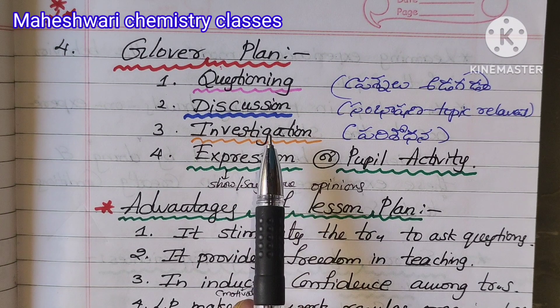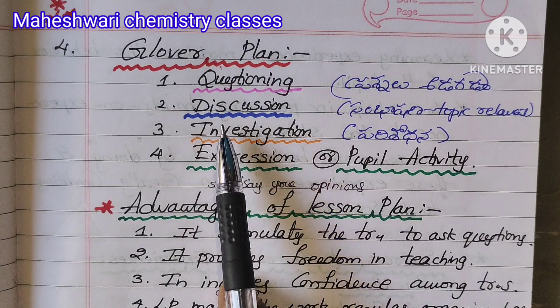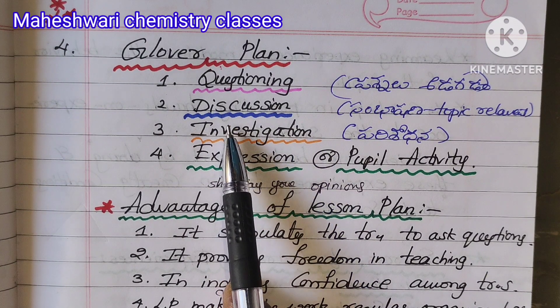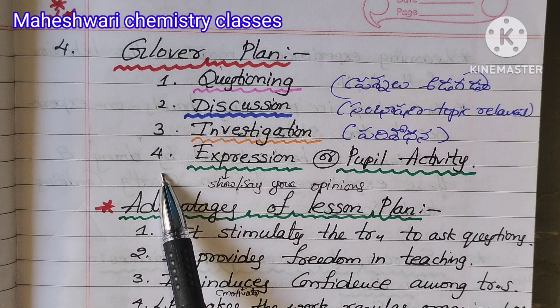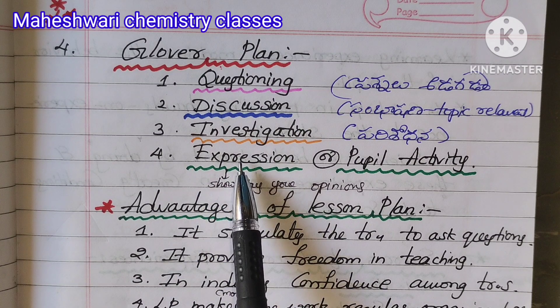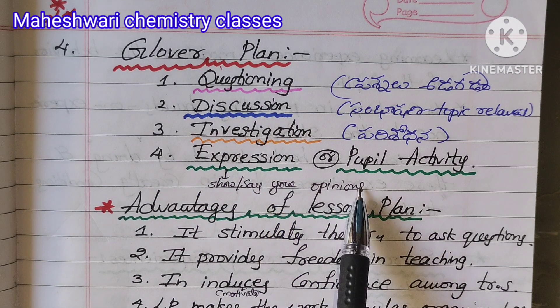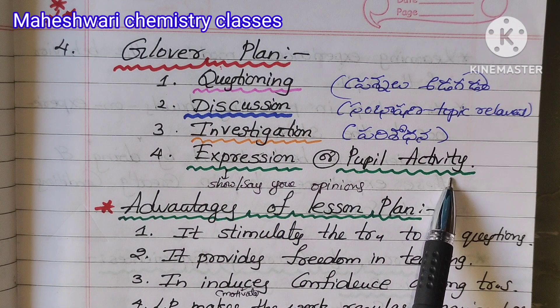The Global Plan has four steps. First is Questioning. Second is Discussion. Third is Investigation. Fourth is Expression, which is nothing but Pupil Activity.